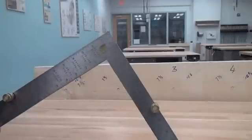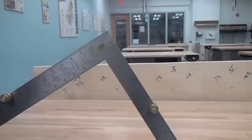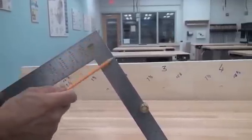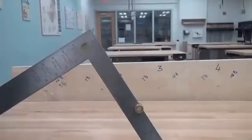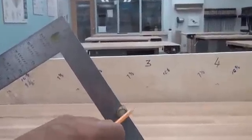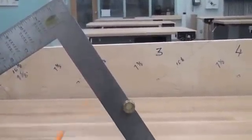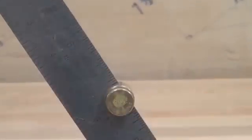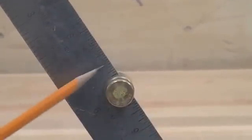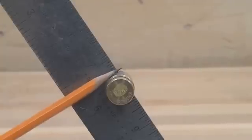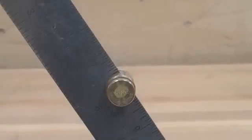Once we have calculated our unit rise and unit run, we take those two numbers. The unit rise number we place on the tongue of the framing square, and we put a stair gauge or stair button right at that exact point. This particular stair button is circular, so we want the outside edge of the circle to be touching 7 and 3 eighths.